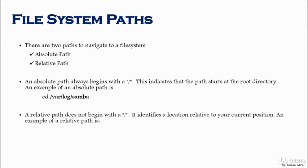The relative path does not begin with a slash. It identifies a location relative to your current position. An example of a relative path: you cd into /var, and once you are already in var, you could just do 'cd log'. We are not using '/log' because we are already in the var directory, and we could simply go into 'cd log' and then from there 'cd samba'. We are not using '/log' or '/samba' because they do not begin with slash — they are within the /var directory.